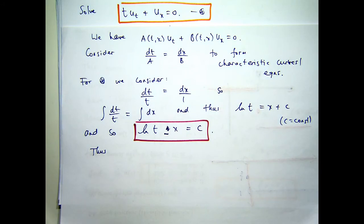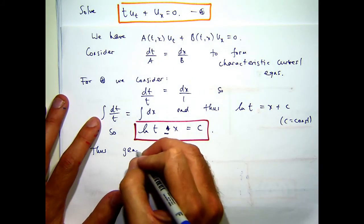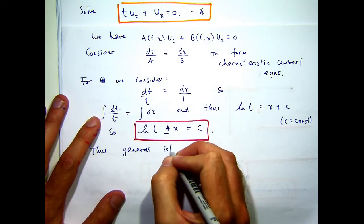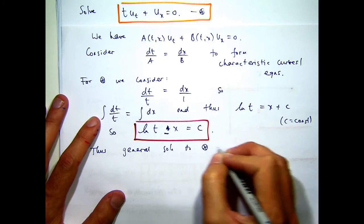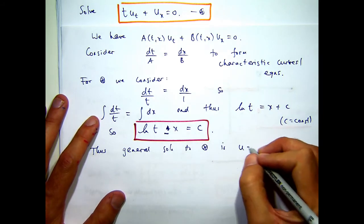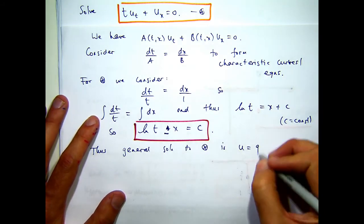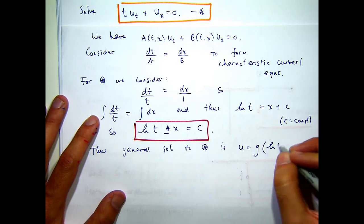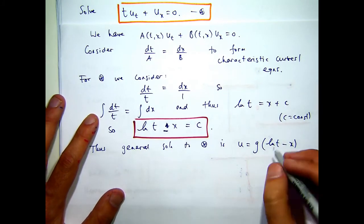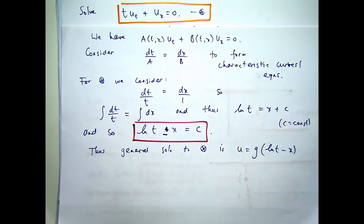So, our U is constant along these types of curves. And so, the general solution, let's say G. Where G is an arbitrary function.